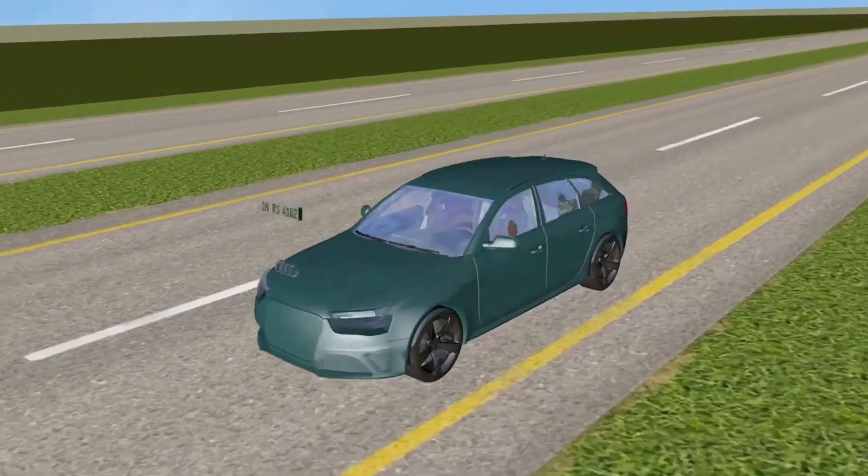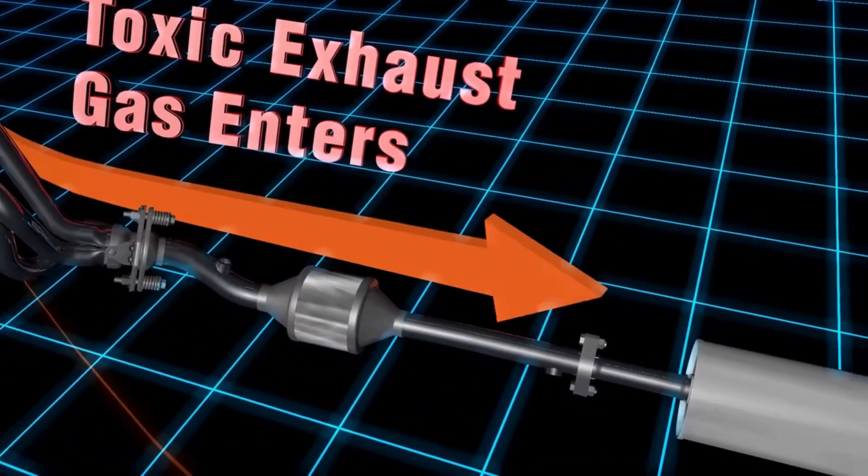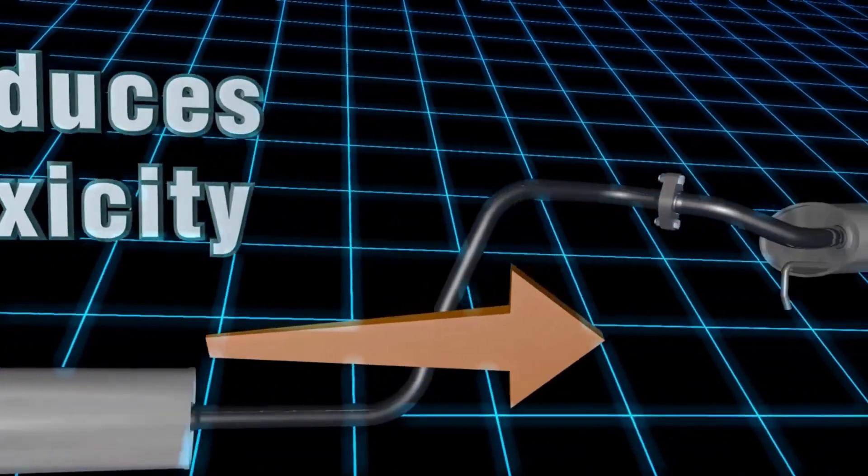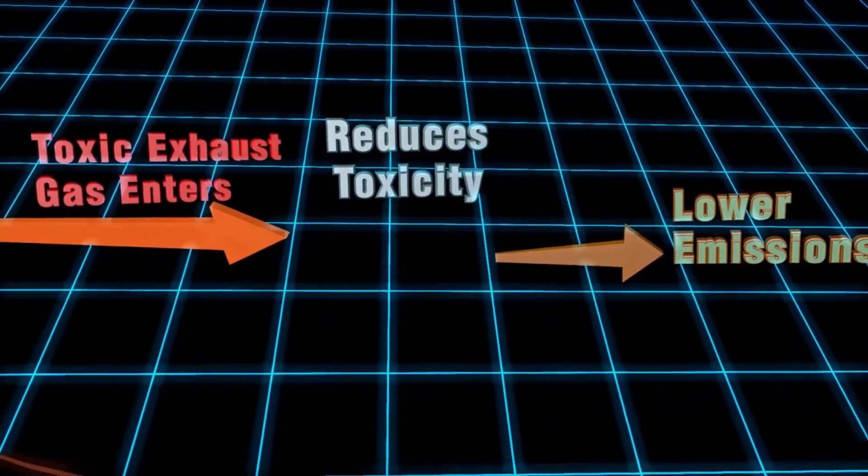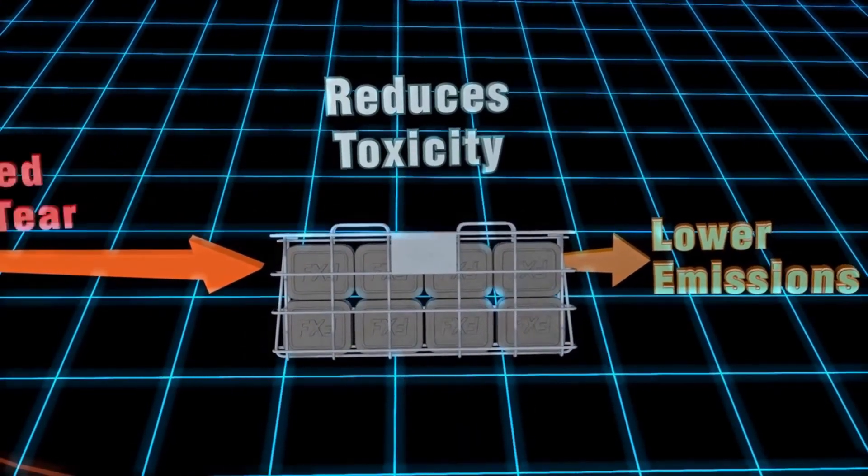but it's a very similar process to that of the catalytic converter in your car. Instead of using a catalyst to reduce toxic pollutants in exhaust gas, Fry-Lo uses a catalyst to reduce the wear and tear on your deep-fryer oil, allowing the oil to last longer,